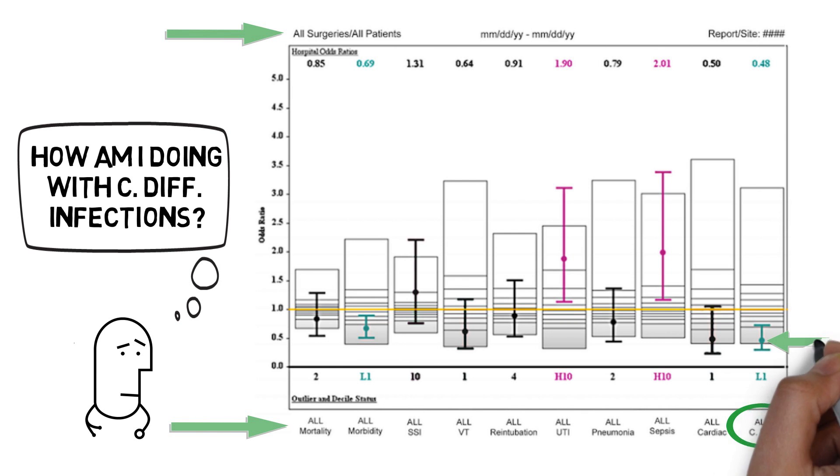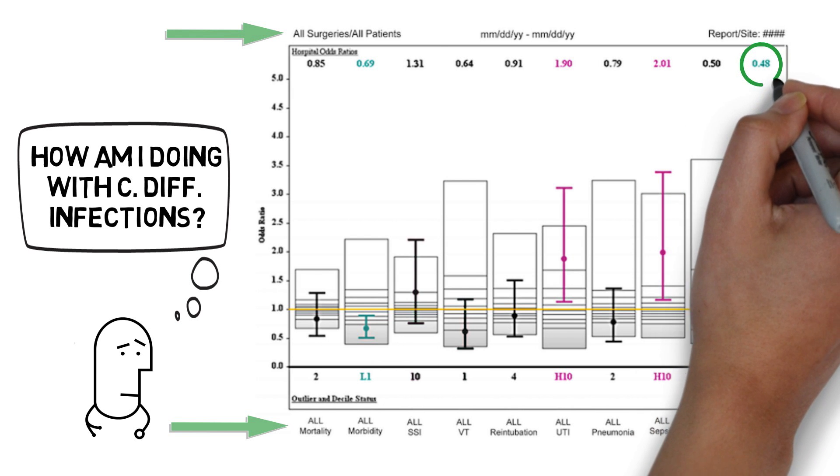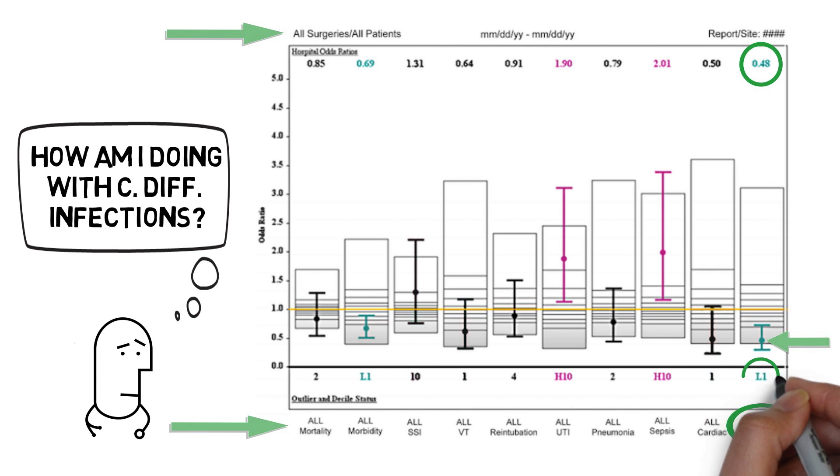Then we need to have a look at the bottom to find the outcome measure we're looking for, in this case C. difficile infections. You can see that our data for this outcome measure are green, which is a good sign, that our point estimate for our odds ratio is 0.48, which is good, and that our point estimate is in the first centile, which is also good.